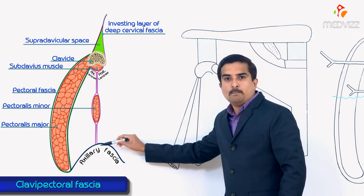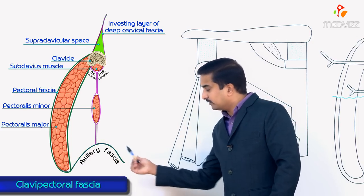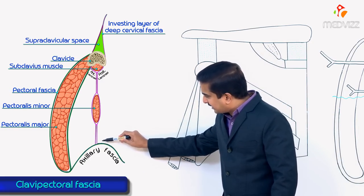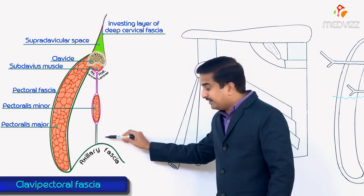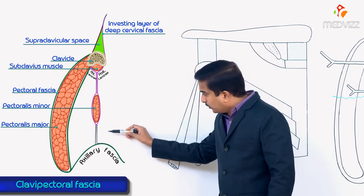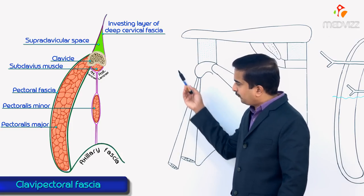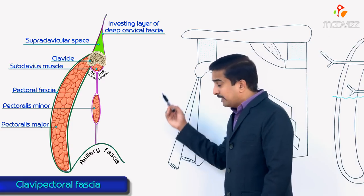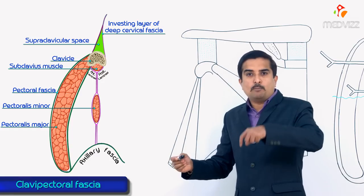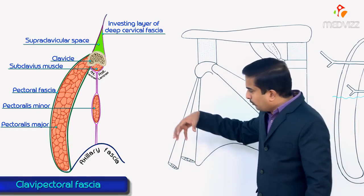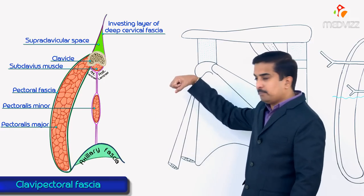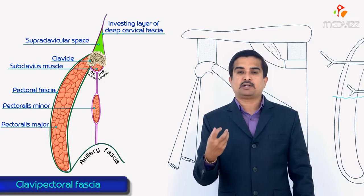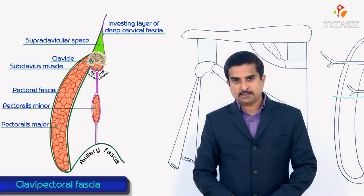The suspensory ligament of the axilla is attached to the dome of the axillary fascia. Its importance is that it keeps the dome of the axilla pulled up, maintaining the concavity of the axilla. That is the importance of the suspensory ligament of the axilla.